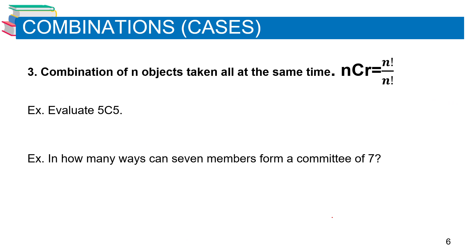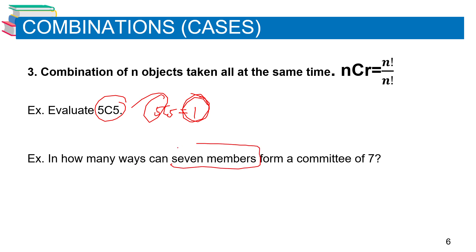Combination rule number three: combination of n objects taken all at the same time always equals one, because it is without regard to order. For example, 5C5 equals one. Example: If seven members form a committee of seven, then 7C7 equals one, because taking all of them at once without regard to order gives only one combination.